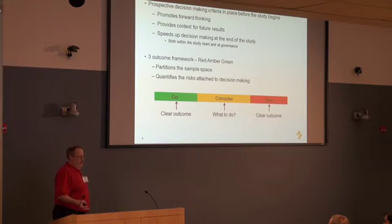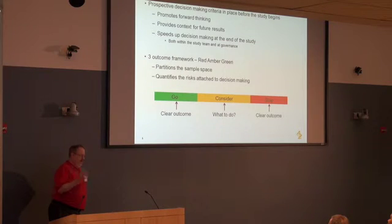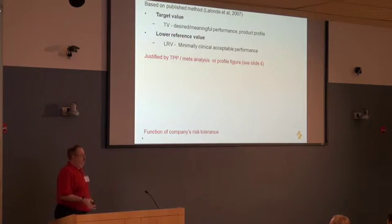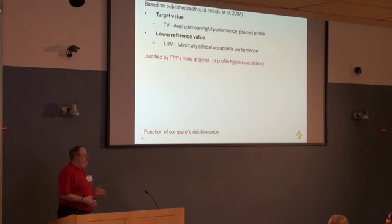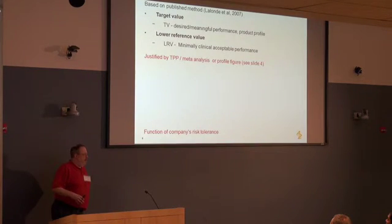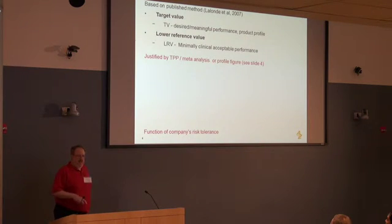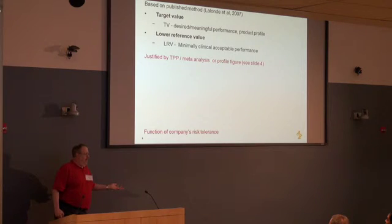What we're proposing, based on a methodology proposed by Lalonde in 2007, is to break up the sample space for the statistic into either a go, a no-go, or a consider zone. To do that, we need a few things. First and foremost are the target and lower reference values. The target value is a treatment effect that you would expect to promote a phenomenon of switching — a treatment effect so good that people will want to use your drug even though there's a good alternative out there.